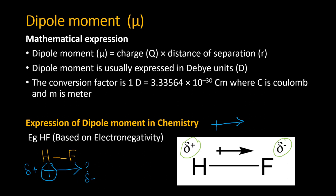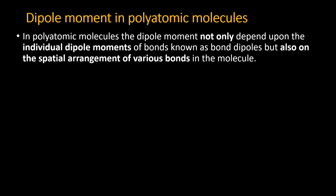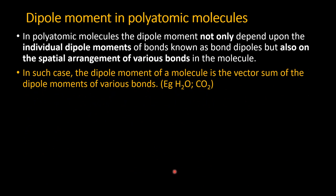In a diatomic molecule, one atom is positive and the other negative — straightforward. But for polyatomic molecules, dipole moment does not depend only on individual bond dipoles; it also depends on the spatial arrangement of the bonds, i.e., the geometry. In such cases, the dipole moment is the vector sum of the dipole moments of the various bonds.